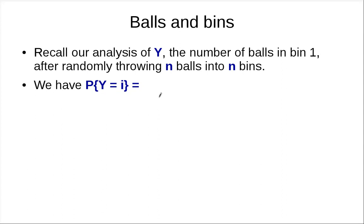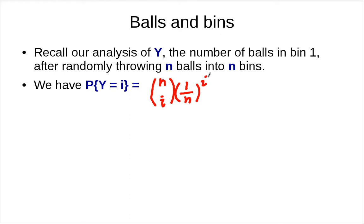Let's look at another example — we've done this before when we talked about balls and bins. Let y be the number of balls in bin 1 after throwing n balls into n bins. For the probability that y equals i, we pick i balls that go to bin 1. Each such ball has n choices but must pick bin 1, so that contributes (1/n)^i. The remaining n minus i balls have n minus 1 choices out of n, giving ((n-1)/n)^(n-i).